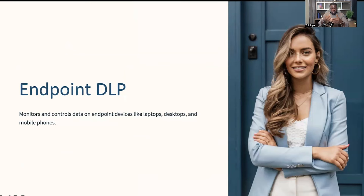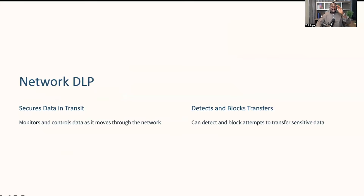Following that, we have Endpoint DLP. This solution monitors and controls data on endpoint devices like laptops, desktops, and even mobile phones. It helps to prevent data loss from these devices, whether they are connected to the network or offline. For example, Endpoint DLP can block attempts to copy sensitive files to a USB drive — because people do that a lot — so it helps you prevent that from happening. Network DLP is another critical tool — it secures data in transit across your organization's network, monitoring and controlling data as it moves to ensure it's not being sent to unauthorized locations. Network DLP can help detect and block attempts to transfer sensitive data over the internet.